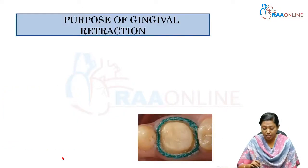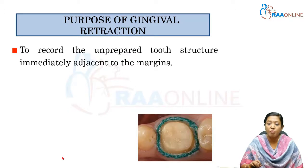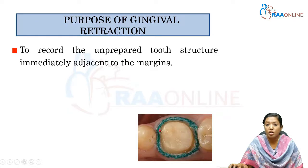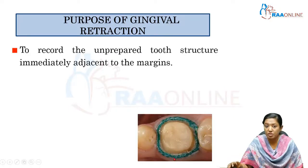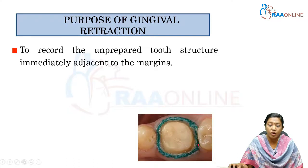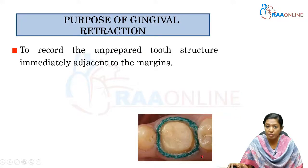The purposes of gingival retraction include: first, to record the unprepared tooth structure immediately adjacent to the margins. For example, after crown preparation, gingival retraction cord is packed into the gingival sulcus to expose the finish line or margin. This displaces the gingiva apically and laterally, enabling excellent recording of the finish line when using addition silicone putty and light body impression material.